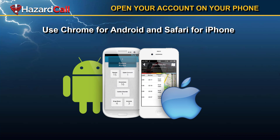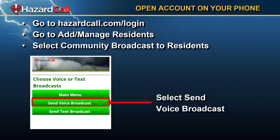The first step is to open your Hazard Call account on your phone by going to the browser. If you have an Android phone, use the Chrome browser. If you have an iPhone, use Safari. Go to hazardcall.com/login and log into your Hazard Call account. Then go to the Add Manage Residence section.